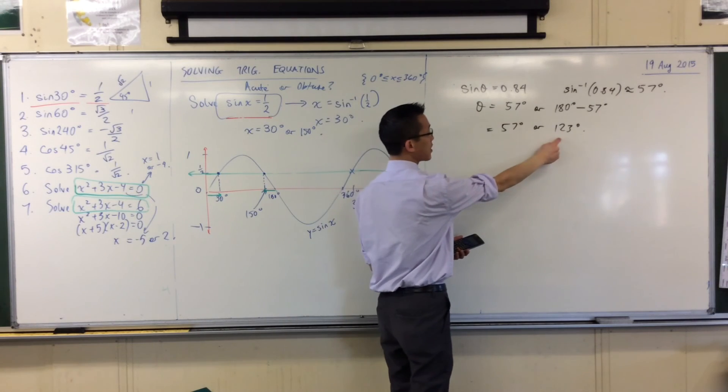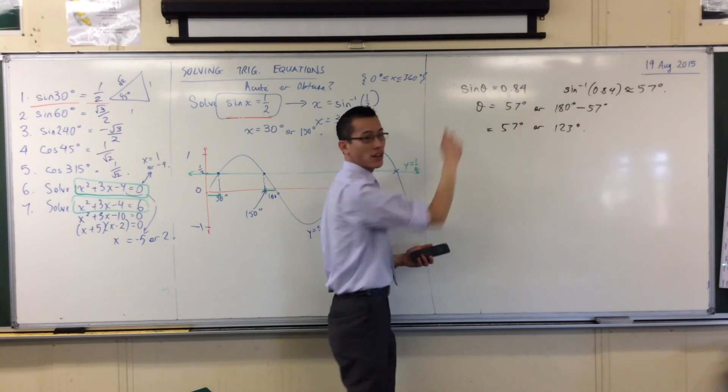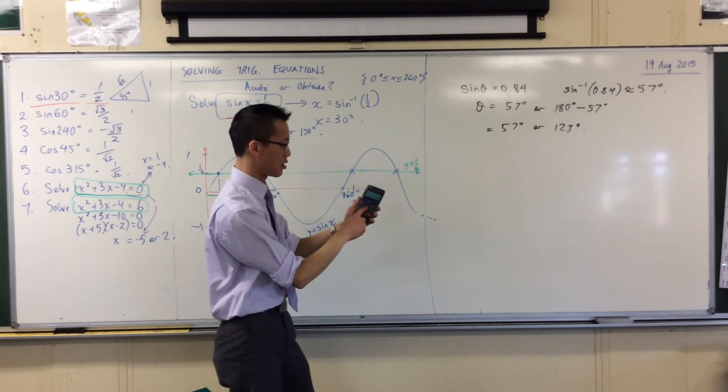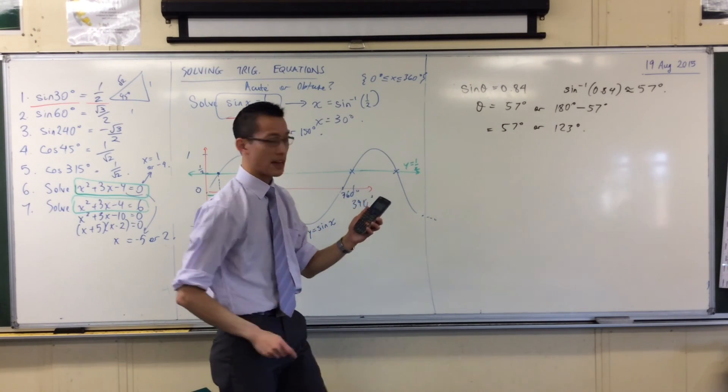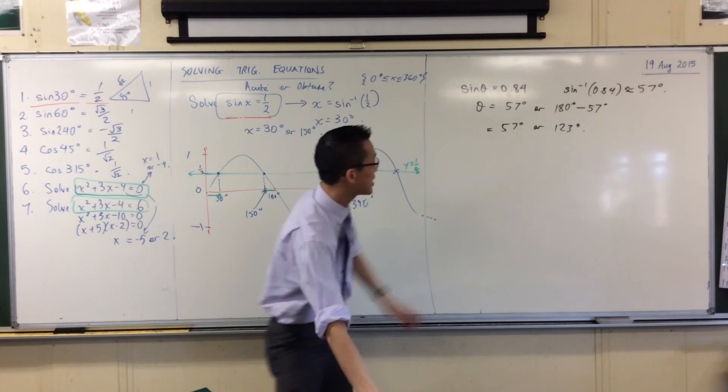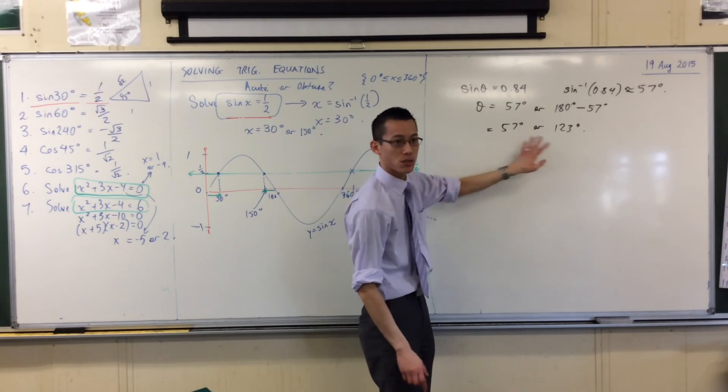If that answer is correct, I should be able to do sine of that angle, and it should give me 0.84, if it's the right answer. So, I'm going to go sine, answer, and sure enough, it hands me back 0.84. So, that's how I quickly test these are my two solutions.